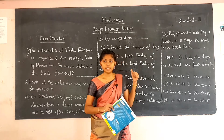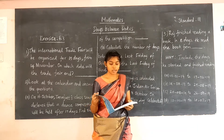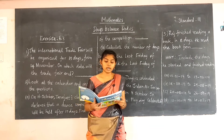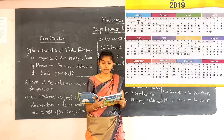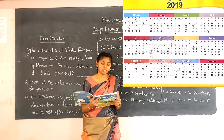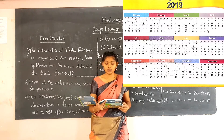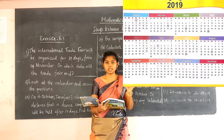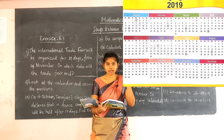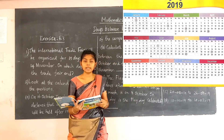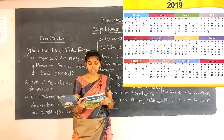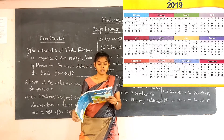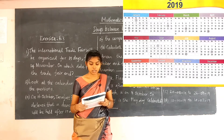Now we are going to see days between dates, which is given on page number 118. Tarunjit's mother has marked the dates of his appointments with the dentist on the calendar. She has marked the appointments on the calendar with a red color circle. See the 2019 calendar given here.